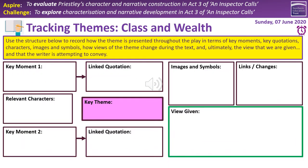For your first main task in today's session, I'd like you to track the theme of class and wealth. This grid is about recording key ideas about that particular theme in the text. It gives you boxes linked to key aspects relating to that theme — a key moment one with a linked quotation, a key moment two at the bottom, boxes for relevant characters, images and symbols, links and changes to how the theme comes across, and a big green box for the overall view given across the whole text.